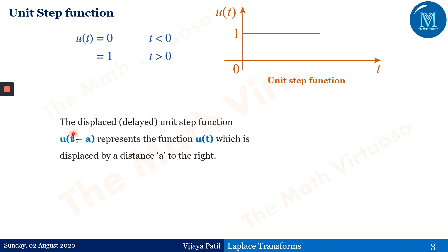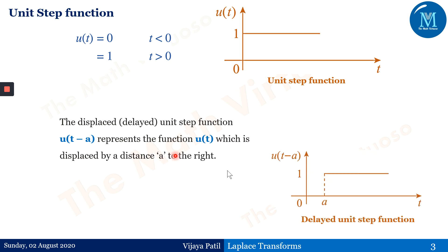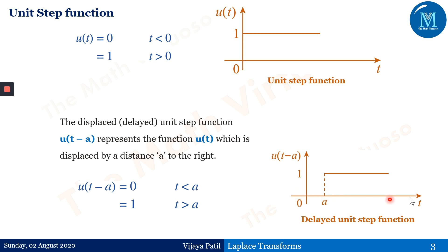There is one more type, known as the delayed function. It is u(t - a), which represents the function u(t) displaced by a distance a to the right. If you observe the graph of this function, the function is 0 for t less than a. So instead of 0 here, we have a. It's known as the displaced or delayed unit step function, and it becomes 1 for t greater than a. The value a can be negative or positive, but for t greater than a, the value of the function becomes 1.